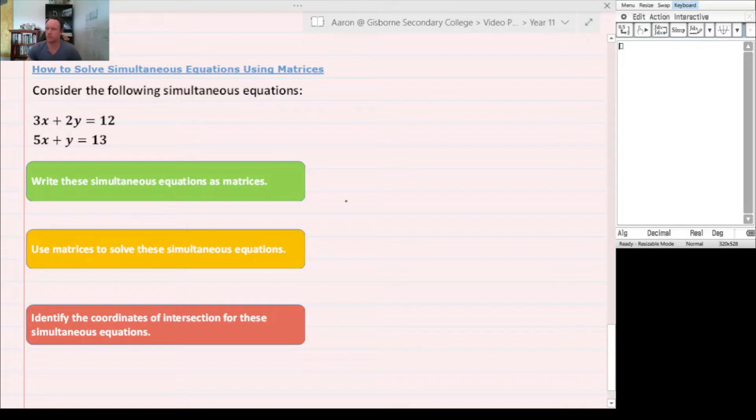The first step is to write these simultaneous equations as matrices. We have what we typically call an AX equals C matrix. A is all the numbers in the correct order—our x's first and y's second. First equation on top, second equation on the bottom. So we've got 3, 2, 5, and 1 because that is 1y. Now x and y go in there, and that equals C. I hope you can see how simple that is to transpose.